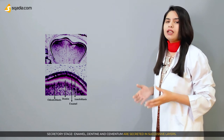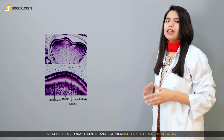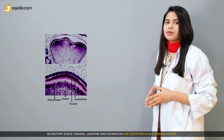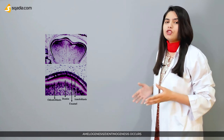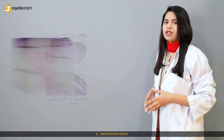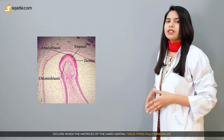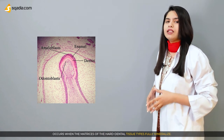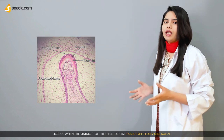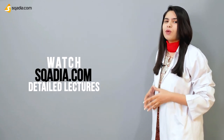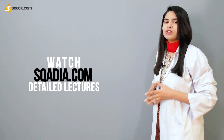The apposition stage is a secretory stage where enamel, dentine, and cementum are secreted in successive layers — amelogenesis and dentinogenesis occur. The maturation stage occurs when the matrix of the hard dental tissues becomes fully mineralized. Watch the detailed lecture on scardia.com histology course — that's a two-minute overview, see you in the next video.